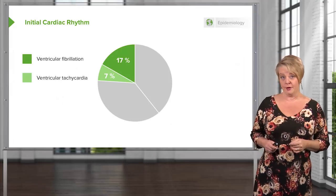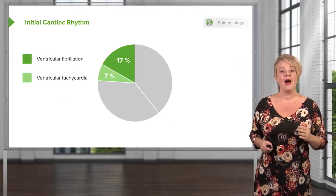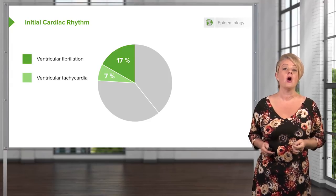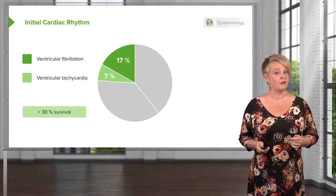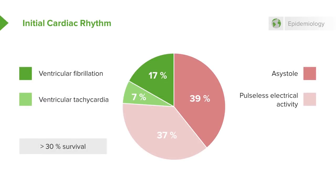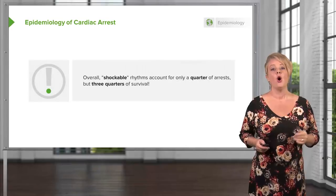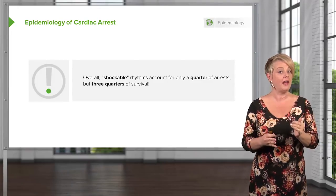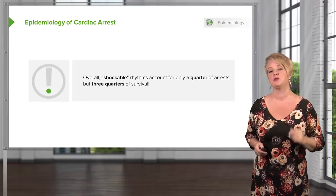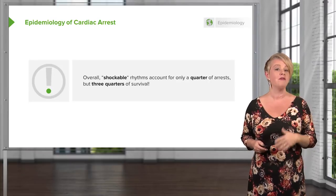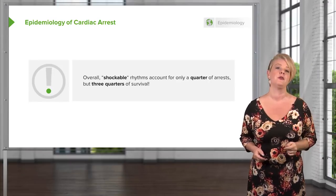When you look at the cardiac rhythm in patients with cardiac arrest, about a quarter have either ventricular fibrillation or ventricular tachycardia, known as the shockable rhythms. Among those patients, you have about a 30% survival rate. The remaining rhythms — pulseless electrical activity and asystole — only produce about a 10% survival rate. Overall, shockable rhythms represent only about 25% of arrests, but three-quarters of patients who survive have shockable rhythms. So you are much more likely to survive if you have ventricular fibrillation or ventricular tachycardia rather than one of the other two arrest rhythms.